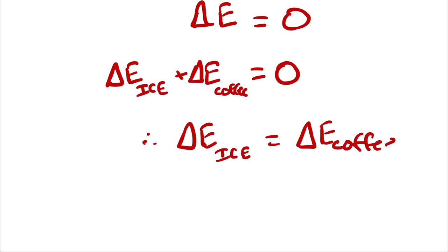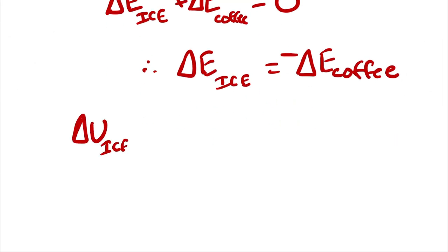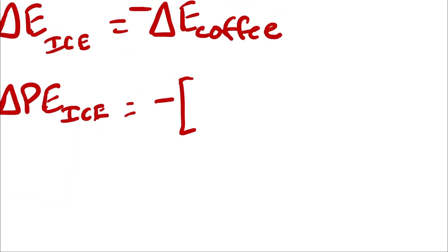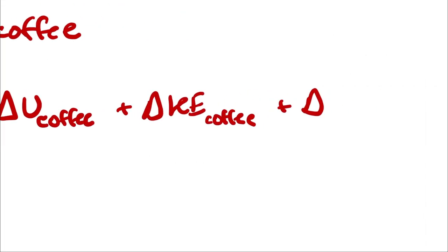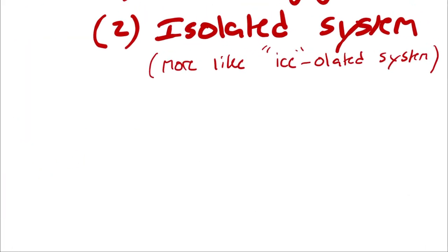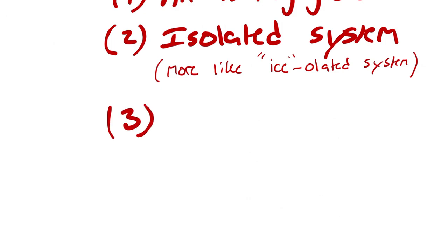Therefore, delta E of the ice must equal delta E of our coffee, just in opposite directions. Therefore, I will add a negative sign on one of the two terms. My energy change is still delta U plus delta KE plus delta PE. And if I neglect changes in kinetic and potential energy for both the ice and the coffee, then I will be left with just delta U of the ice is equal to negative delta U of our coffee.